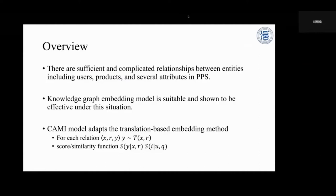The translation-based embedding methods assume that for each relation, the tail entity y should be equal to the translation of entity T(x, r), where T is the designed translation operator. Based on this assumption, we can optimize the embedding method by maximizing the similarity S(y | x, r) between y and T(x, r). Specifically, our task is to score S(y | u, q) to rank items. So this score can also be regarded as a score function for item i and the query q issued by user u in the personalized product search situation.